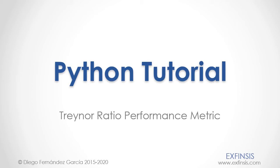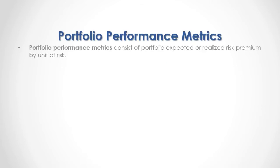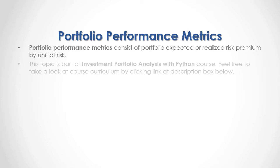Python tutorial: Treynor Ratio performance metric. Portfolio performance metrics consist of portfolio expected or realized risk premium by unit of risk. This topic is part of investment portfolio analysis with Python KERS.